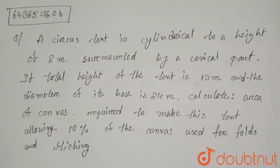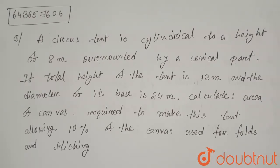Hello everyone. The question is: A circus tent is cylindrical to a height of 8 meters, surmounted by a conical part. If the total height of the tent is 13 meters and the diameter of its base is 24 meters, calculate the area of canvas required to make this tent, allowing 10% of the canvas used for folds and stitching.